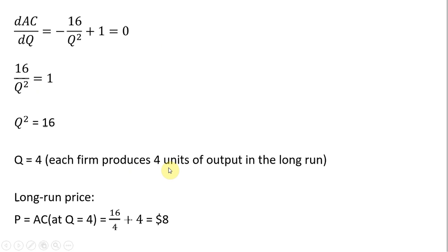Four units of output occurs at the minimum point on the average cost curve. To get the long-run equilibrium price, in long-run, firms make zero economic profit. So price equals average cost or average total cost. We will plug this four into the average cost equation, not the derivative of the average cost equation, but the average cost equation. So writing the average cost equation and plugging four in for Q, the long-run equilibrium price is $8.